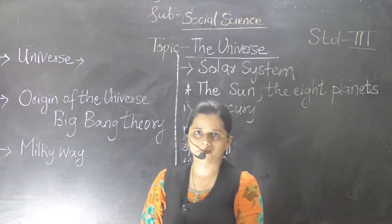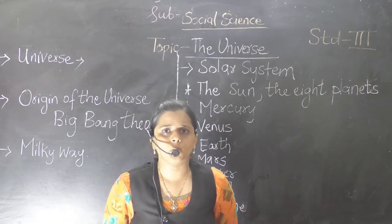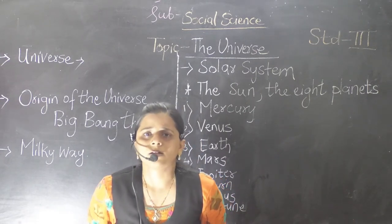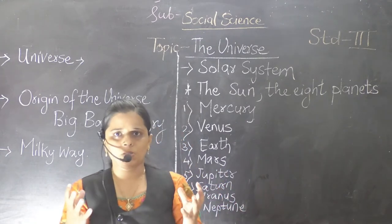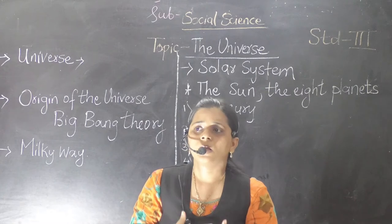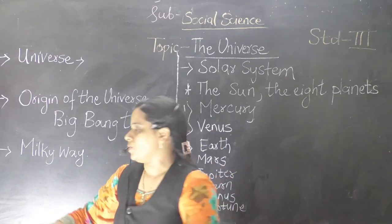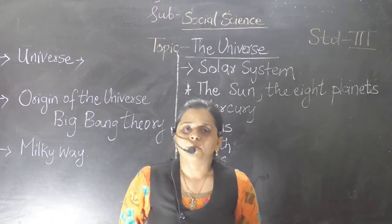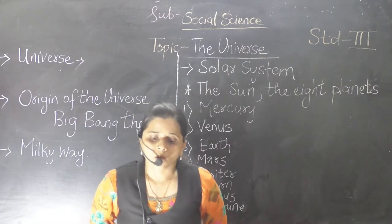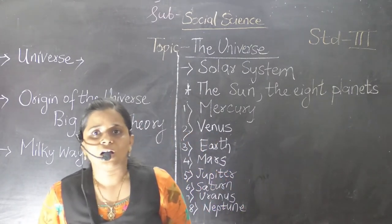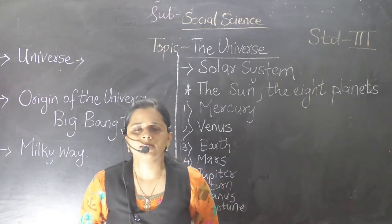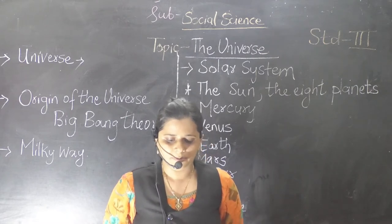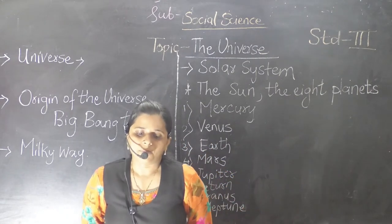Next we have learned about the Milky Way. In the sky there are many stars, and our star belongs to a group called a galaxy. Our Earth comes within the galaxy known as the Milky Way, which is the home of our planet and solar system. The Milky Way is also known as Akash Ganga in Hindi. The Earth, the sun, and the rest of our solar system are a tiny part of the Milky Way galaxy.